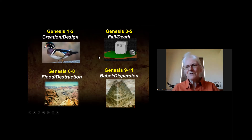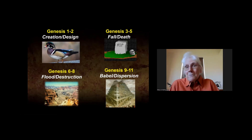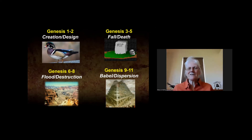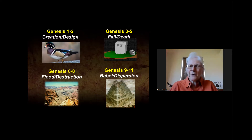In Genesis 3 to 5 we see evidence that something happened to that very good earth — it no longer is very good. Adam and Eve had been placed on this earth to have dominion over it, to dress it, to keep it, to take care of this earth as God's agents. But when they rebelled against God and sinned, they turned that job over to the enemy, Satan.